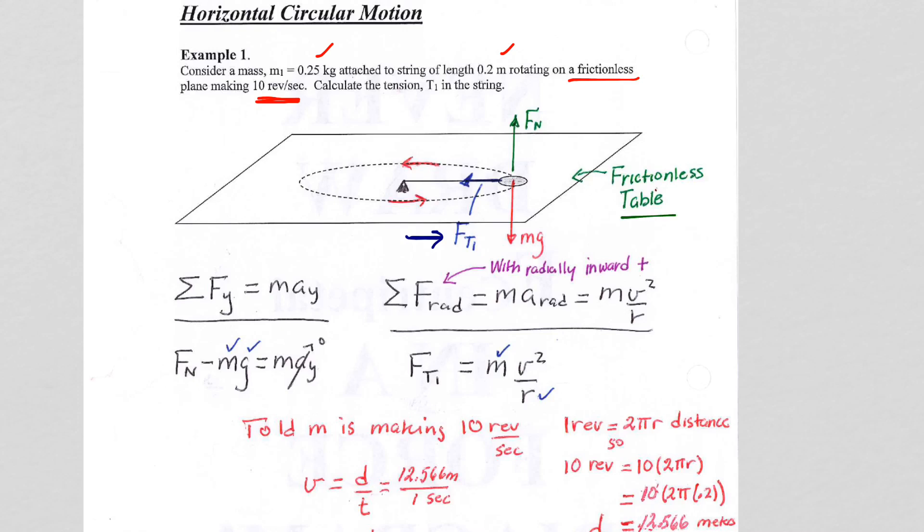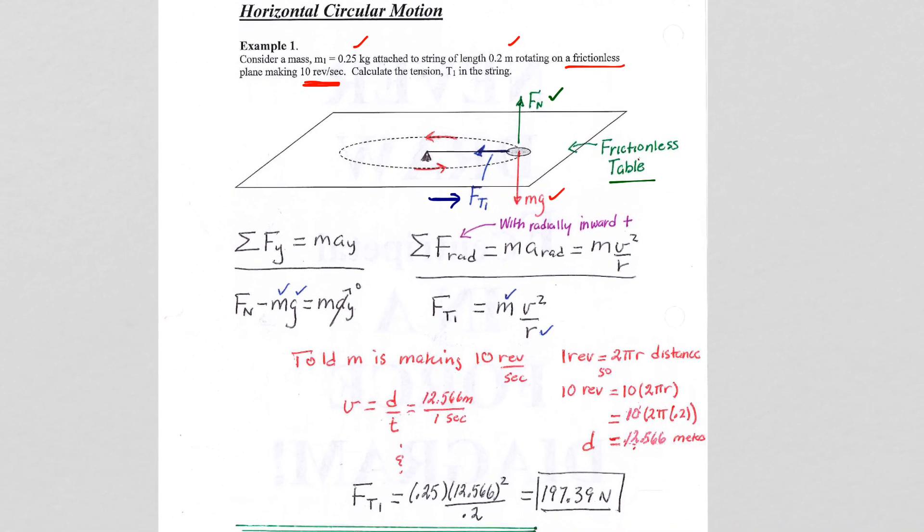So you are looking at a horizontal frictionless table. The velocity at any point in time would be tangent. We have the gravitational force mg straight down, and in this case, the normal force would equal the gravitational force because we have no other forces in the y direction. So then we do sum of the forces in the y direction, and the sum of the forces in the x direction we are going to replace with the radial direction. So our sum of the forces in the y direction: the normal force equals mg because we have sum of the forces equals mass times acceleration. There is no acceleration since it is not moving in the vertical direction.